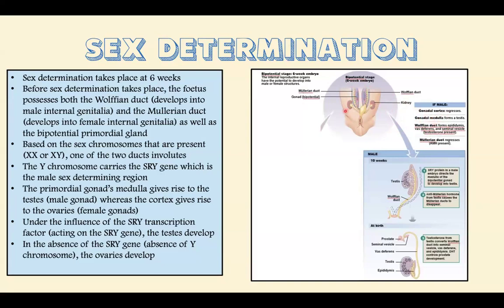If the baby has XY chromosomes, the body knows it's male. The gonadal medulla is kept, giving the testes, and the gonadal cortex involutes so there's no formation of ovaries. The Y chromosome carries the SRY gene — the sex-determining gene — which causes the involution of the gonadal cortex while the gonadal medulla is preserved, giving you the testes.